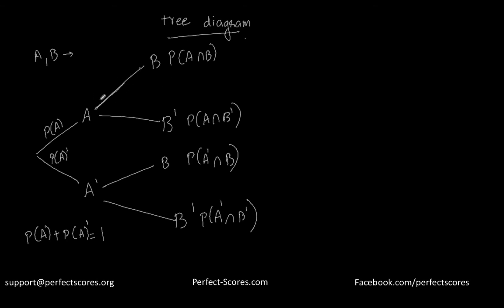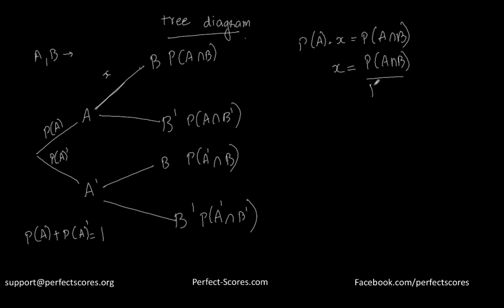What do you put on the branches of the tree diagram? If I label the branch probability as X, then the probability of A multiplied by X equals the probability of A intersection B. That means X equals the probability of A intersection B divided by the probability of A. And what is this equal to? This equals the probability of B occurring given that A has already occurred.